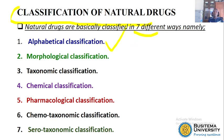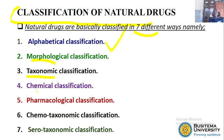One is alphabetical classification — with alphabetical classification we use either the English name, the Latin name, or the local name to classify the natural drug. Then we have morphological classification, where we classify based on the morphology of that particular natural drug — for example, those that are organized and those that are unorganized. The third way depends on taxonomy, which we call taxonomic classification.